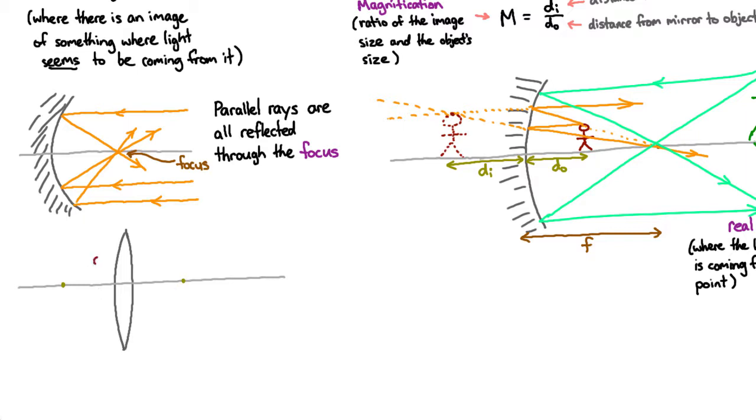If you have an object on one side, you can figure out what kind of image you're going to get by following the normal rules of light rays. A light ray that goes through a focus will go out parallel, and a light ray that goes in parallel will go through a focus. You can see that these two rays appear to be coming from something back here, so we've got a virtual image.